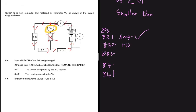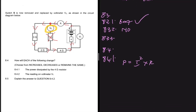Question 8.4.1 asks how the power dissipated by the 4-ohm resistor will change. We use P = I²R, because using a formula with V would require calculating V for both circuit configurations — too much work. The resistance of the 4-ohm resistor stays the same, so we only need to determine whether the current increases or decreases.